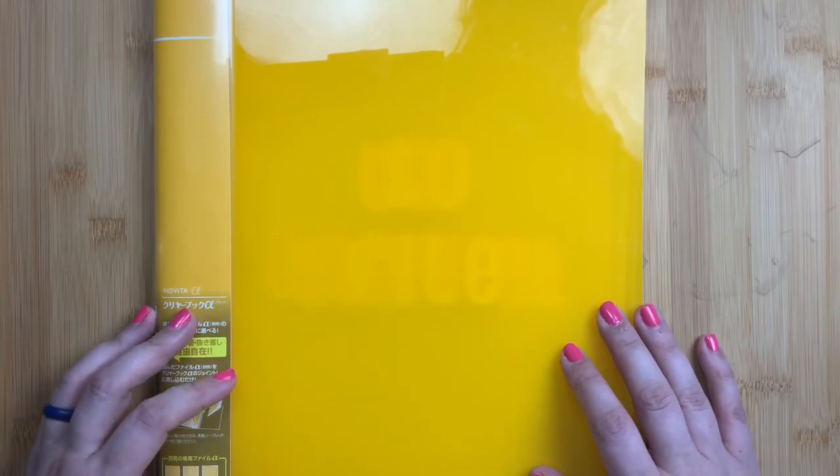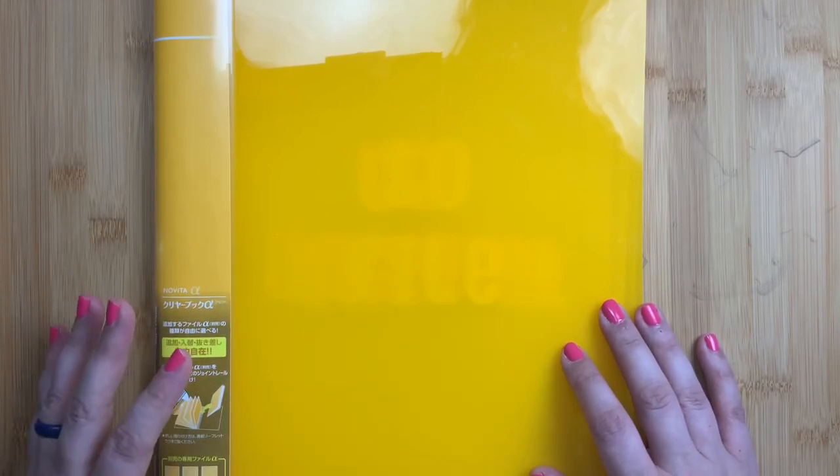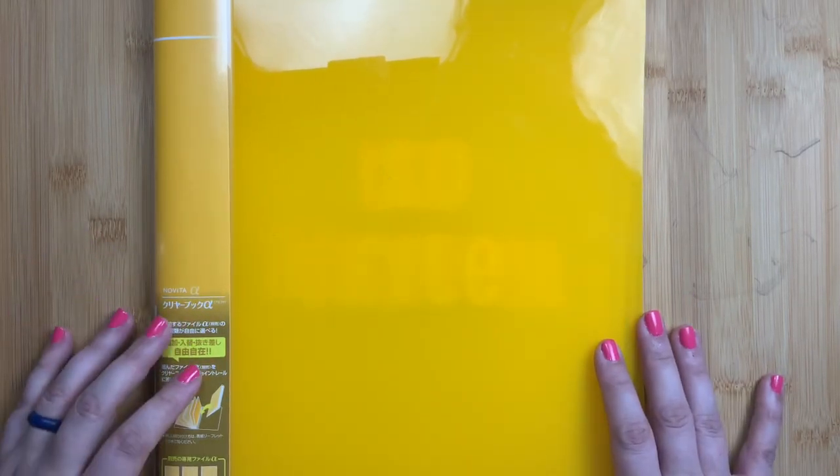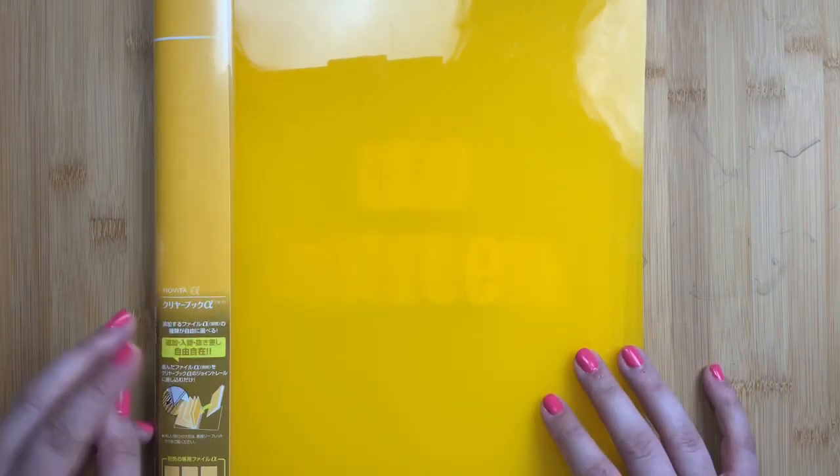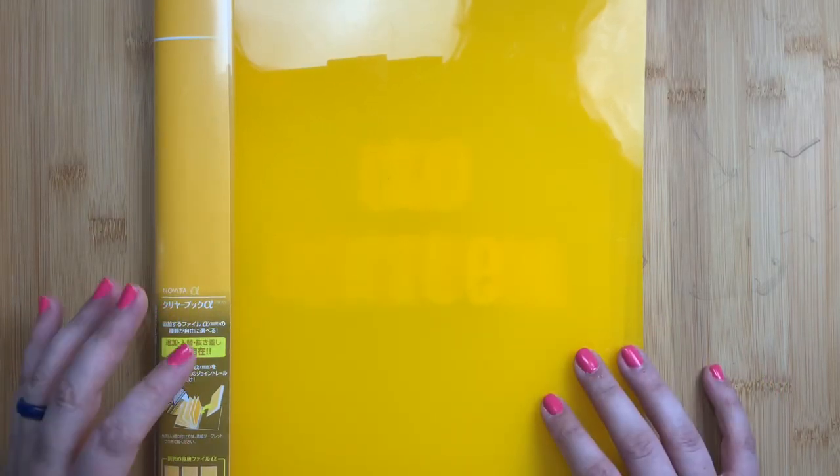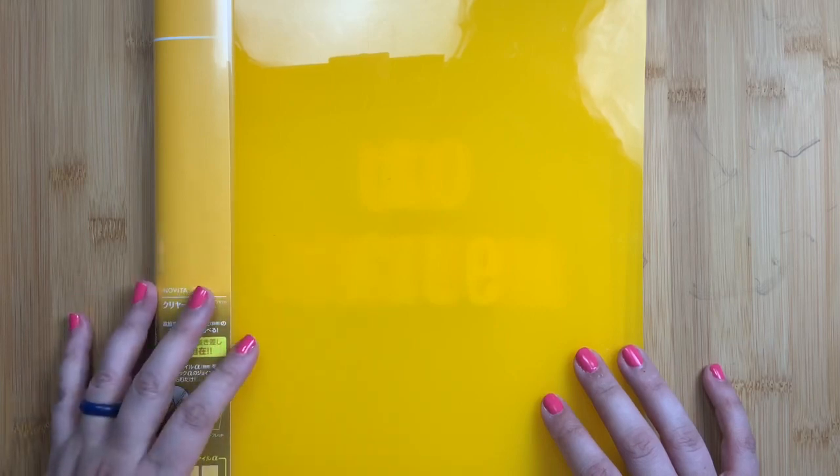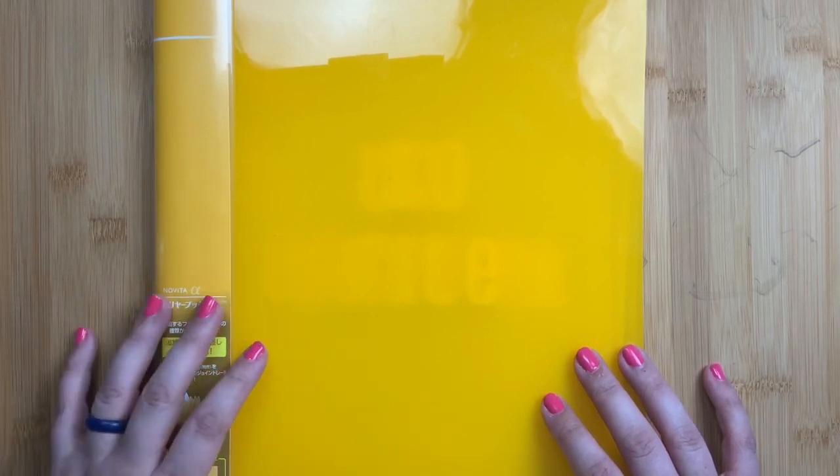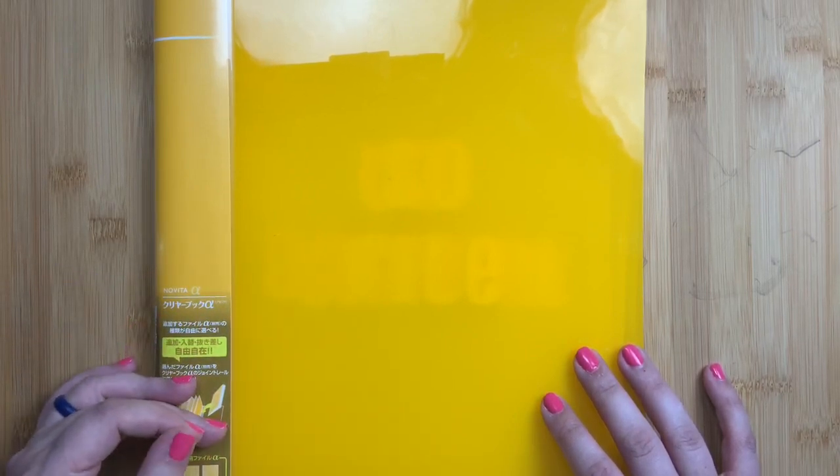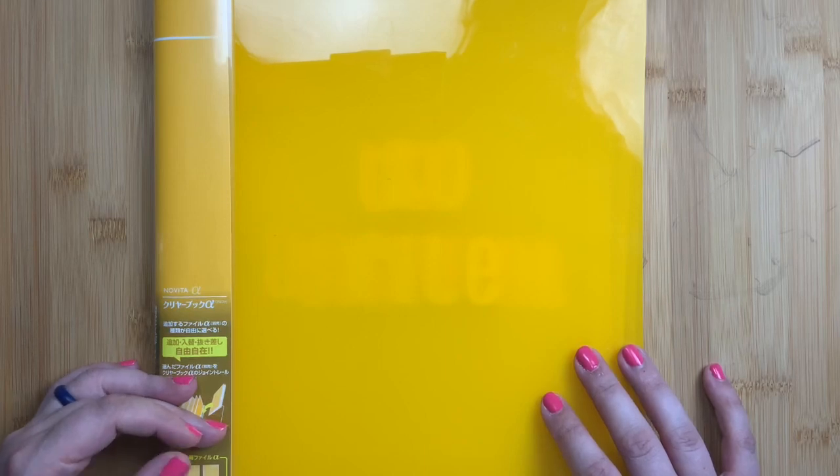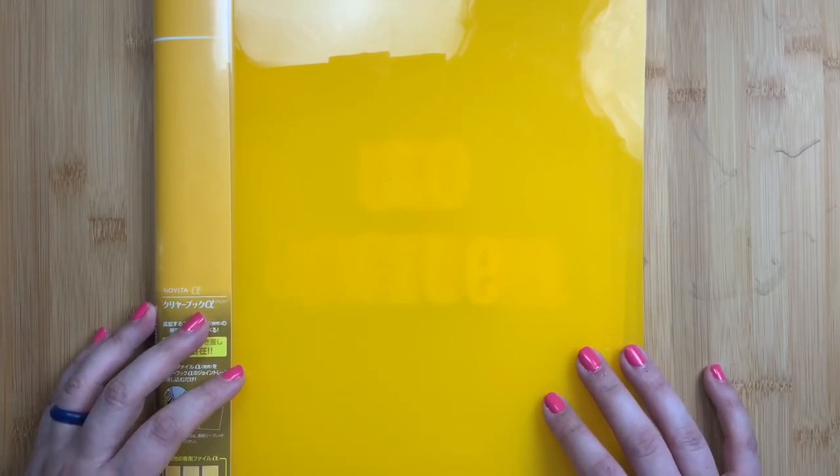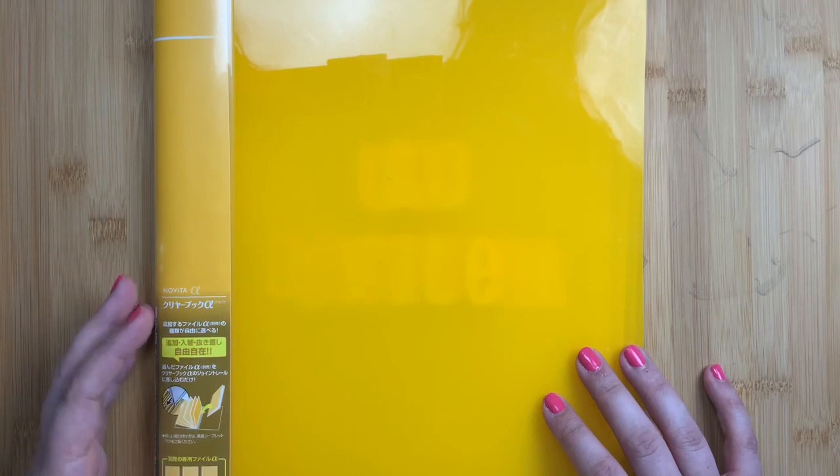Welcome back to JustScribble for my mail station setup. In my last JetPens haul, I shared these clear books from Kokyo and the file system that they use. I had two ideas for organization that would utilize these clear books, one being a fountain pen ink swatch book. I'll be doing a full setup of that in a future video.